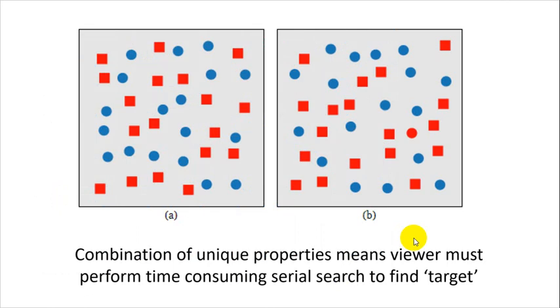So I want you to realize that now that we've made this a little bit more complicated, and we've created a combination of visual properties, we've lost the ability to leverage that pre-attention. The viewer has to categorically search through each one of these and compare and look for the red circle.